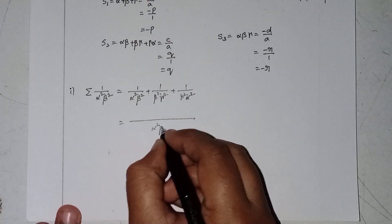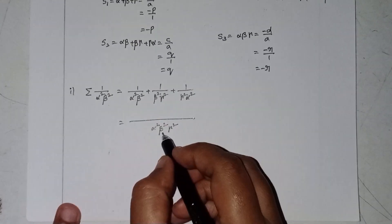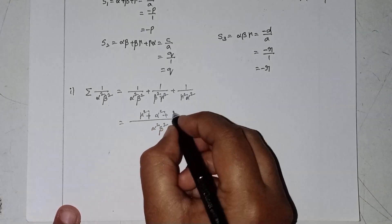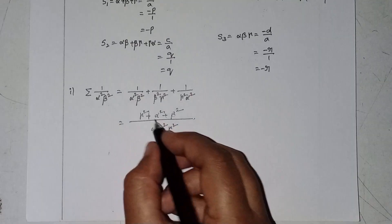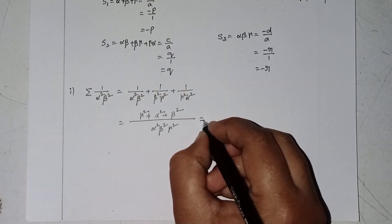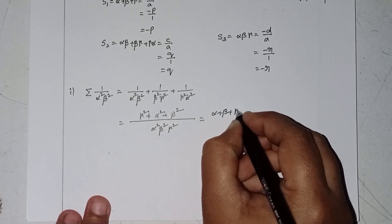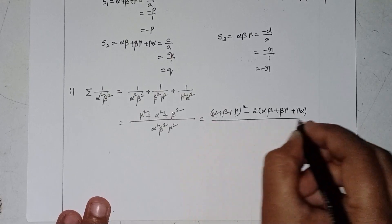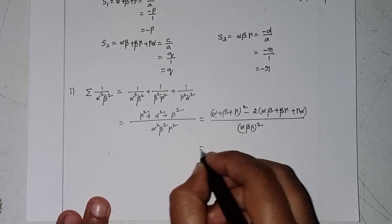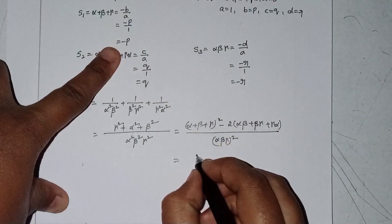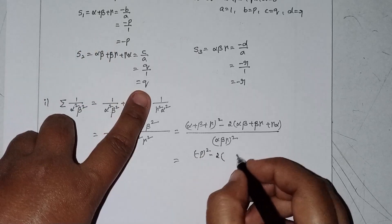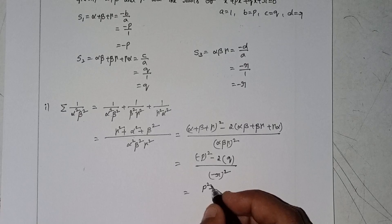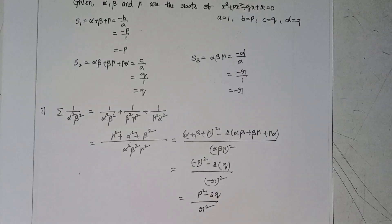Taking LCM = α²β²γ², the numerator becomes γ² + α² + β². Using the formula a² + b² + c² = (a+b+c)² - 2(ab+bc+ca), this equals (α+β+γ)² - 2(αβ+βγ+γα), all divided by (αβγ)². Substituting: (-p)² - 2q over (-r)² = (p² - 2q)/r².